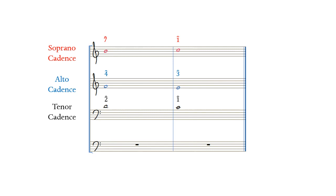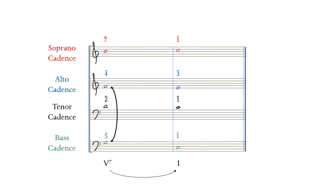By simply lumping all four cadence formulas together, we get a four-voice authentic cadence that includes our dominant 7th chord resolving to the final tonic chord. Notice that this dominant 7th chord features a dissonant harmonic interval of a minor 7th between the bass scale degree 5 and the alto scale degree 4. This dissonant chord could not be used in a first species counterpoint exercise for this reason — it is dissonant — but it was used very commonly at the authentic cadences that closed phrases, sections, and entire pieces of free composition.